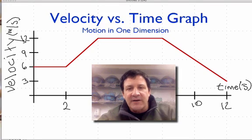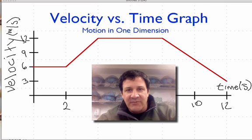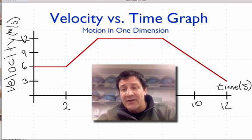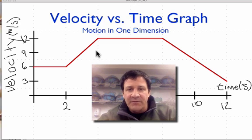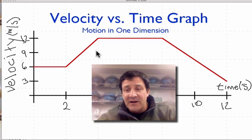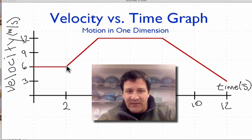In this video I'm going to go over the velocity versus time graph and what information we can get from the line drawn on it. In the previous video I went over the position versus time graph, where the slope of the line was the velocity. This is the velocity versus time graph, and these lines all have slopes, but the meaning of that slope is very different — it does not equal the velocity.